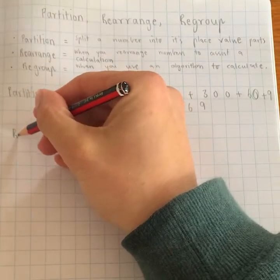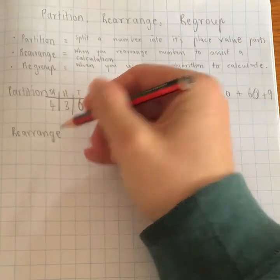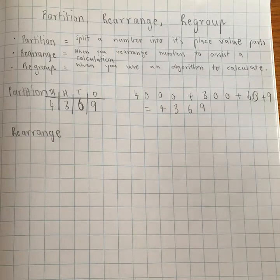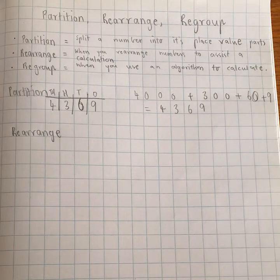Next one is rearrange. So when we rearrange a number, we're sort of changing the order that the numbers maybe are added or subtracted so that we can calculate things a little bit more easily. So here's an example.